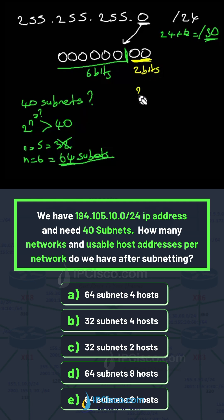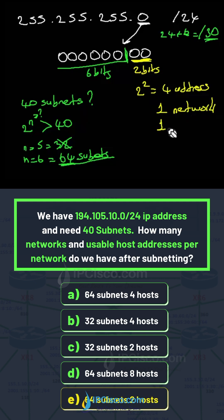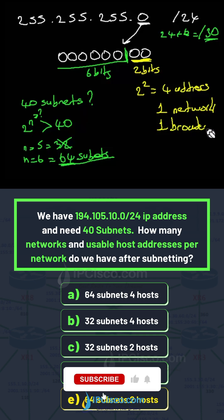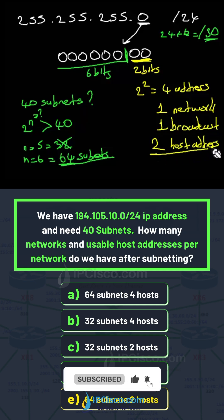The remaining bits are our host bits. We have 2 to the power of 2, which gives 4 total addresses, and the usable host addresses are 2 host addresses.